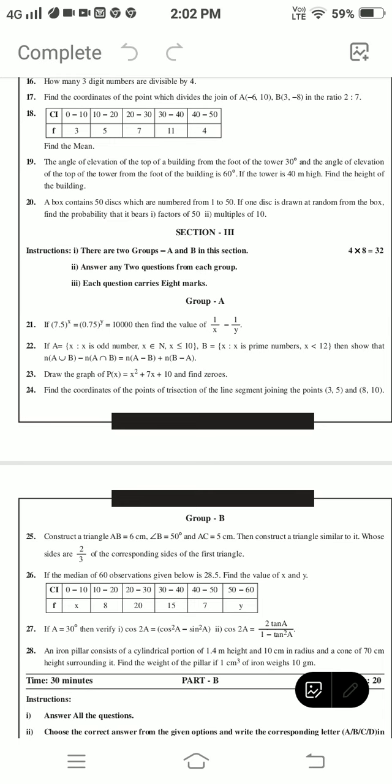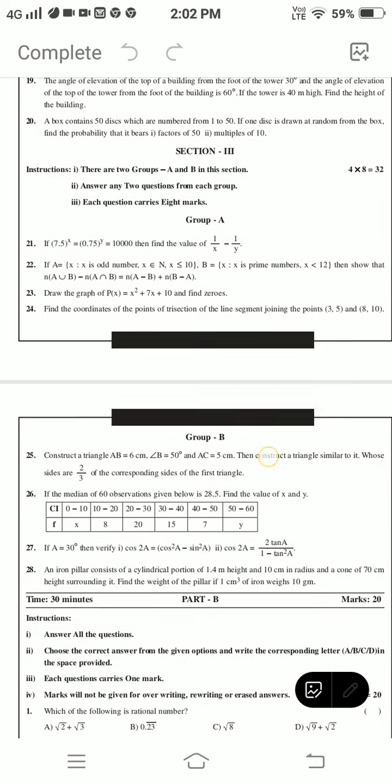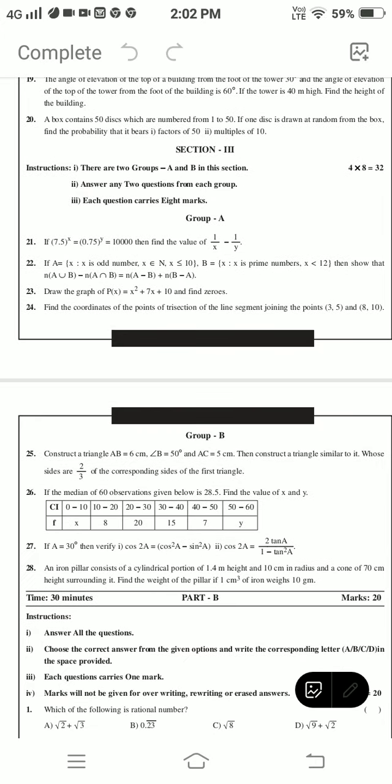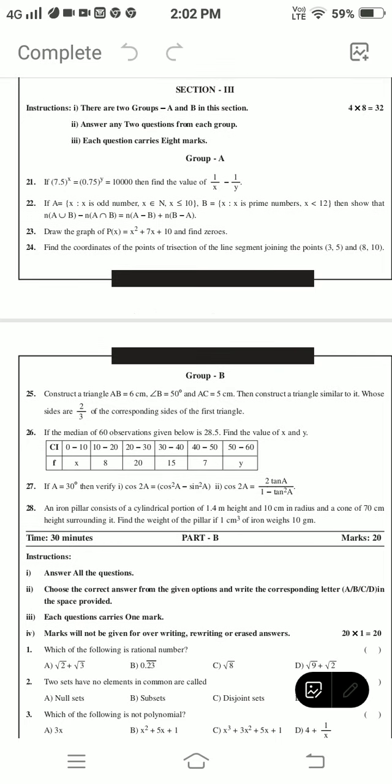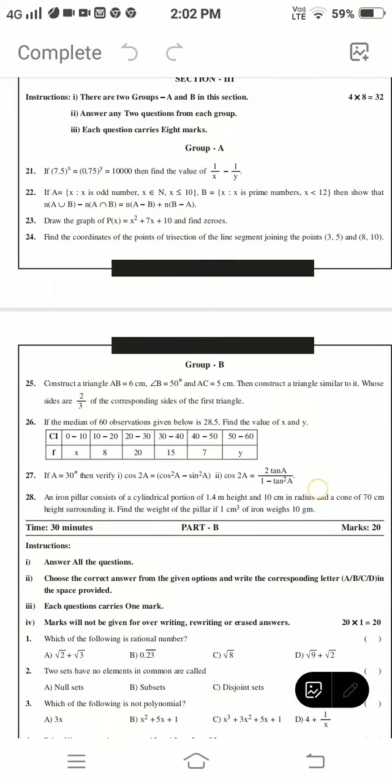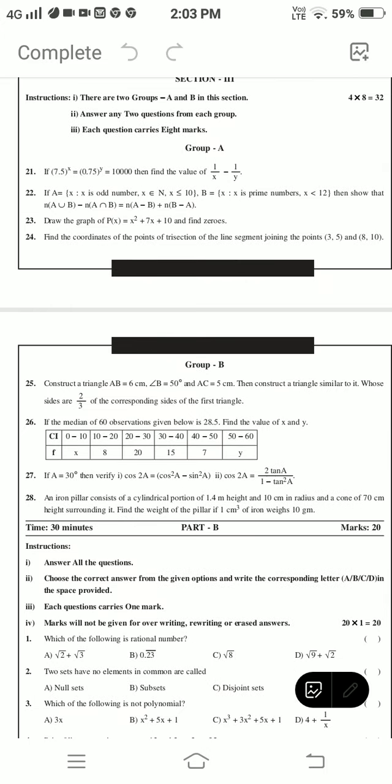Question 23: Draw the graph of P(x) = x² + 7x + 10 and find the zeros. Question 25: Construct a triangle AB = 6 cm, angle B = 50 degrees, and AC = 5 cm. Construct a triangle similar to it whose sides are 2/3 of corresponding sides of the first triangle. Question 26: If the median of 60 observations given below is 28.5, find the value of x and y.